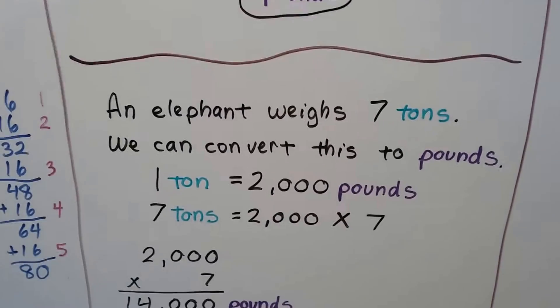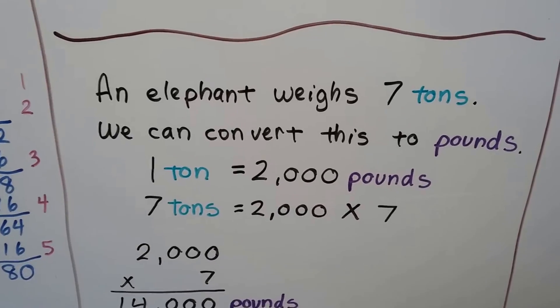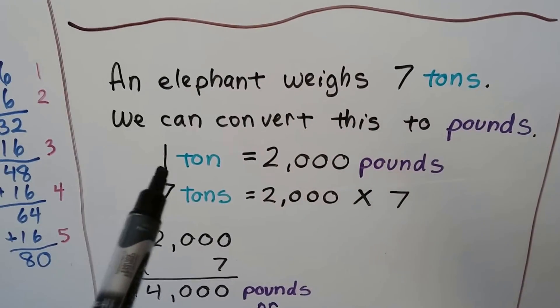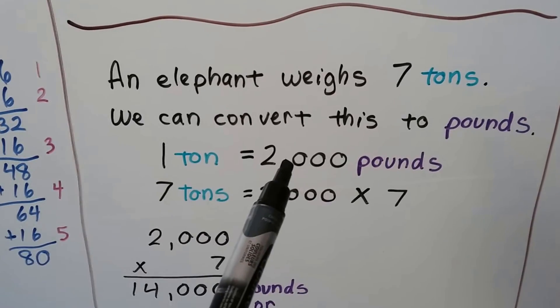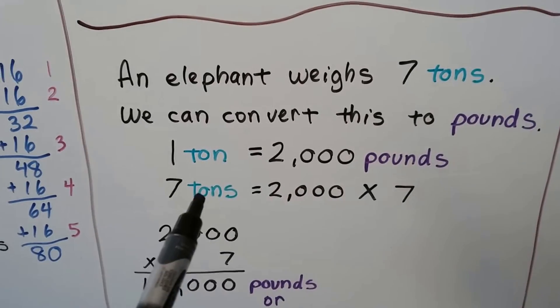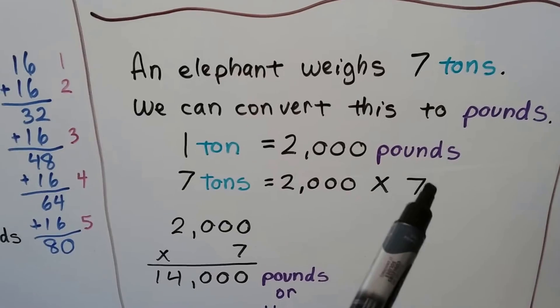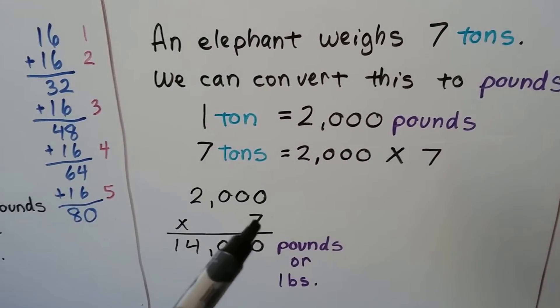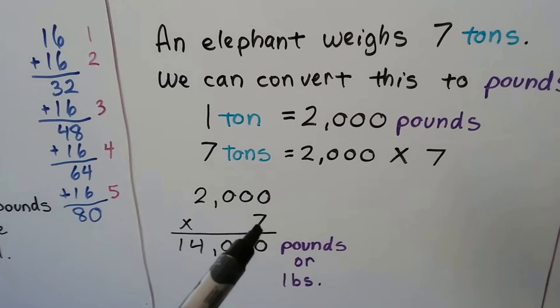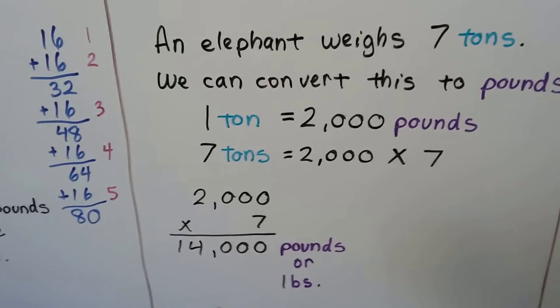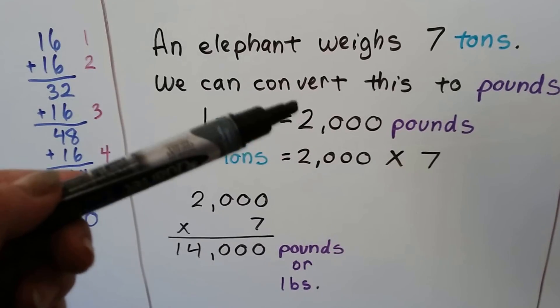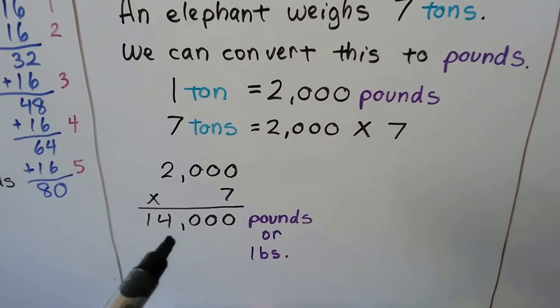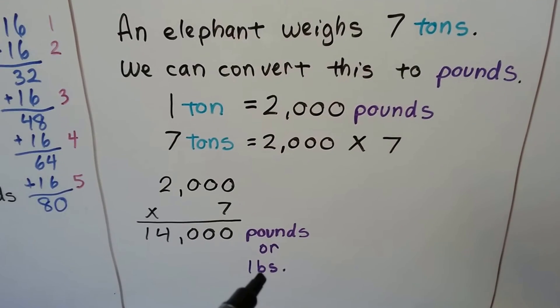An elephant weighs 7 tons. We can convert this to pounds. How many pounds are in 7 tons? Well, we know 1 ton is 2,000 pounds. So 7 tons would be the 2,000 times 7. We would do 7 times 0 is 0. 7 times this 0 is 0. 7 times this 0 is 0. And 7 times 2 is 14. We could also add 2,000 7 times. So it's 14,000 pounds. We write it as LBS for pounds.